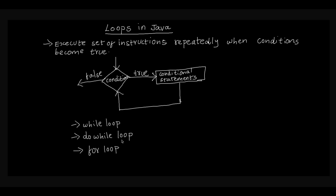In this video, we will talk about for, do-while, and while loops. The main principle of looping is to execute the set of instructions repeatedly when a condition becomes true. If a condition is satisfied, the set of statements can be repeated.